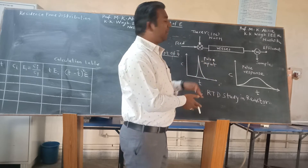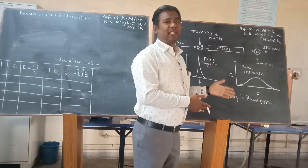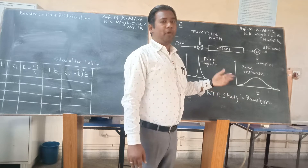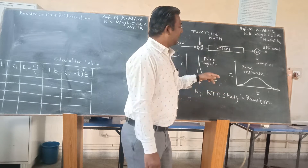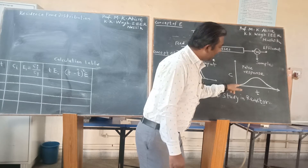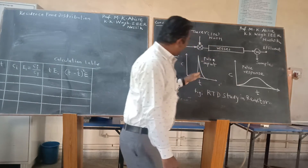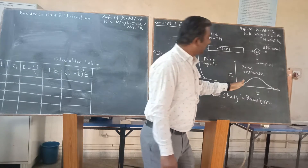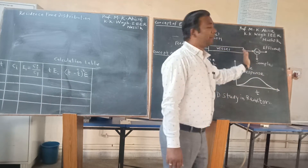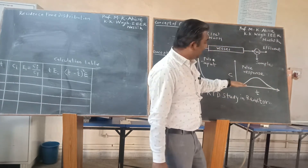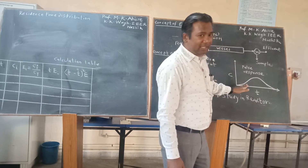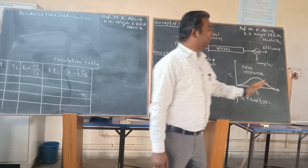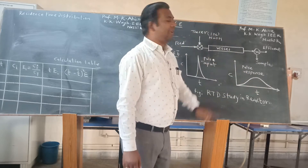If you decrease the interval, you will get more readings and the accuracy of RTD determination will be more. This graph indicates that in one shot the tracer material is injected, but it is not coming out in one shot — it is gradually coming. Gradually the concentration is increasing, and then gradually its concentration is decreasing in the effluent sample.